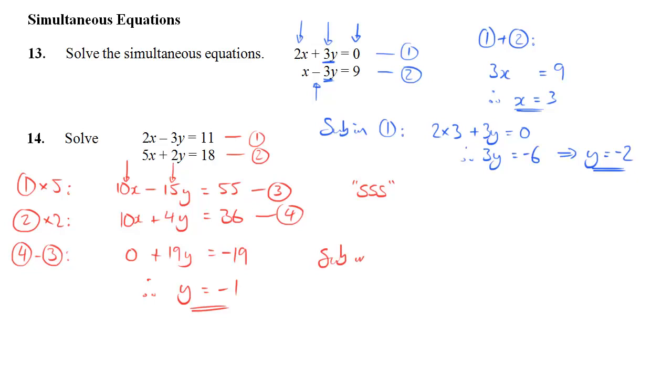And as with the other question, we're going to substitute it into one of our equations. I think I'll go with equation 2. So we have 5x plus 2y, but y is minus 1, so we now have 2 times minus 1, and that is equal to 18. So that's obviously 5x minus 2 equals 18. And now this is straightforward to solve. I'm simply going to add 2 to both sides to get 5x equals 20, and divide by 5 to give x equals 4. So my solution, x equals 4, y equals minus 1.